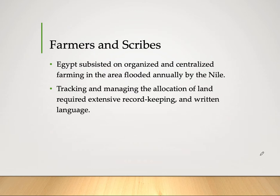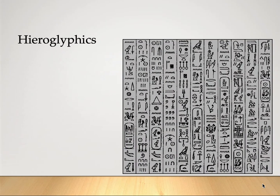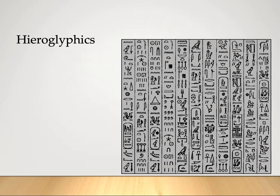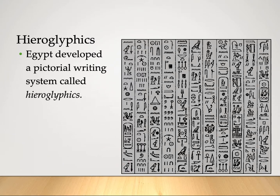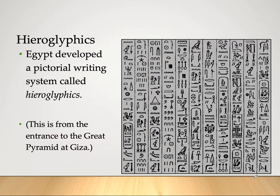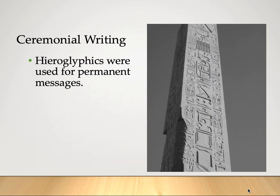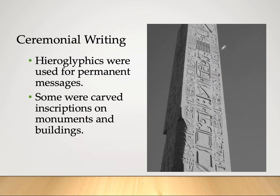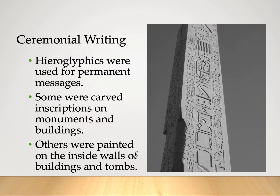When it comes to written language, Egypt has the famous hieroglyphics. Hieroglyphics is a written language created by Egypt in the form of pictures — a pictorial writing system. This particular hieroglyphics you see here is found on the entrance of the Great Pyramid of Giza. They also used it in ceremonial writing. Hieroglyphics were used for permanent messages, carved on stones, walls, and monuments.